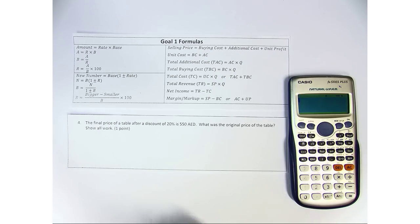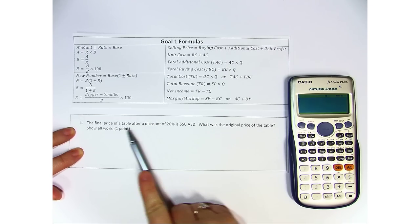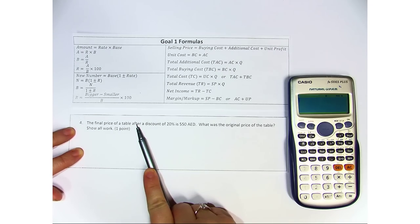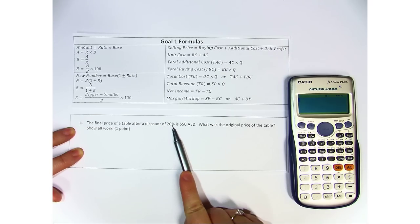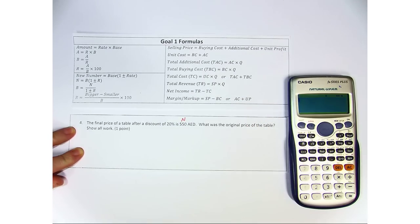So let's go ahead and look through number three and look at exactly what we're looking for you to put. The final price of a table after a discount, so this is after the discount is applied of 20%, is 550. So this is our new price.